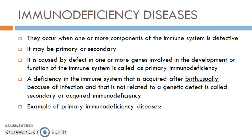A deficiency in the immune system which is acquired after birth — usually because of infection and not related to a genetic defect — is called secondary or acquired immunodeficiency.